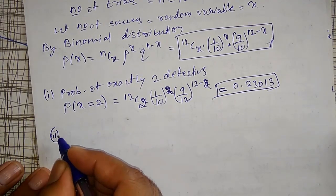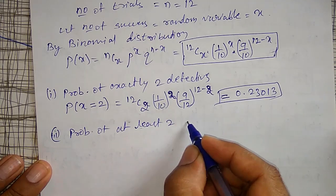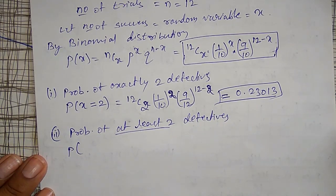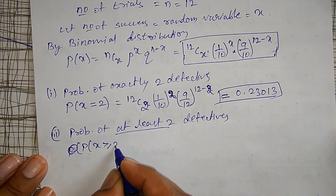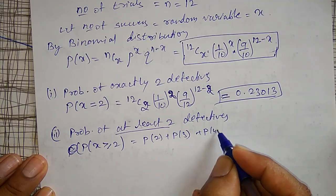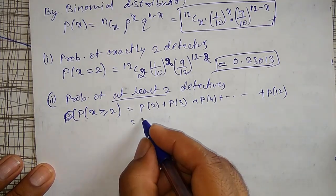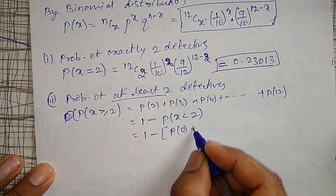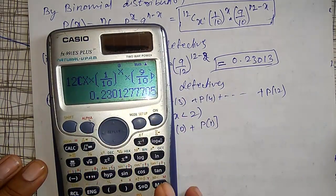The second part is the probability of at least two defectives. At least two means getting two, three, four defectives up to a maximum of 12. So P(X ≥ 2) requires adding P(2) + P(3) + ... + P(12). Instead, using the complement, this equals 1 minus P(X < 2), which is 1 minus [P(X = 0) plus P(X = 1)]. This is the simplest approach.